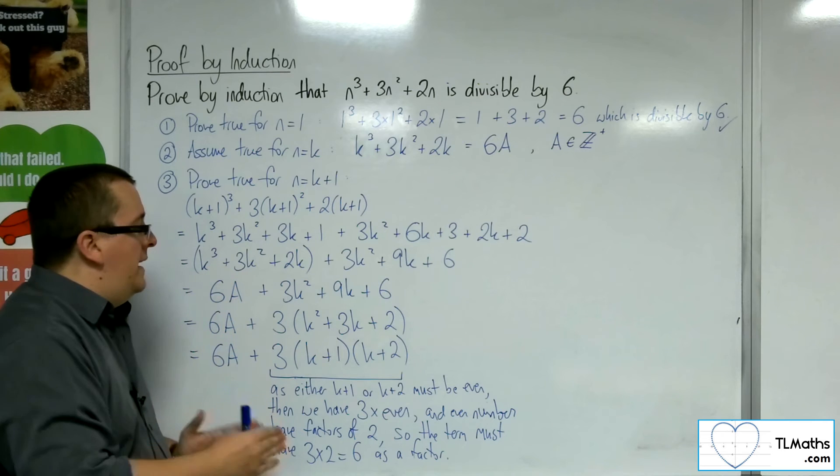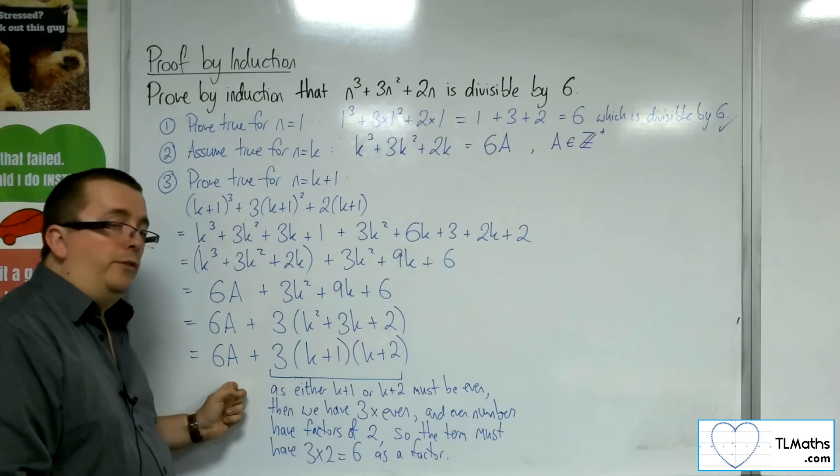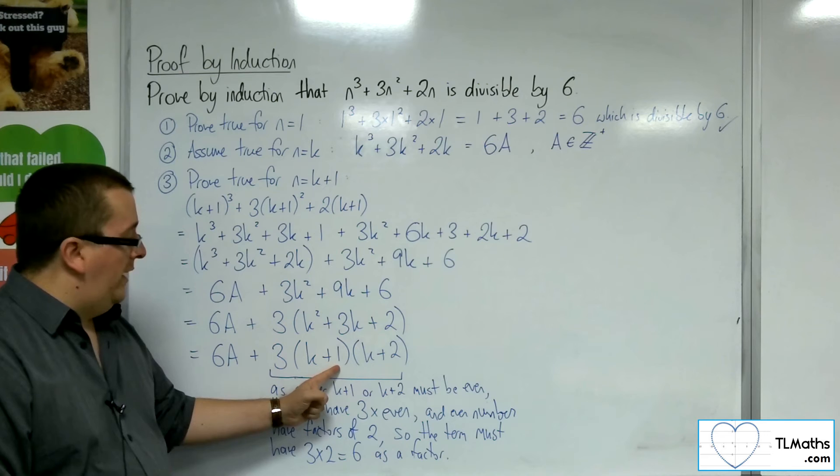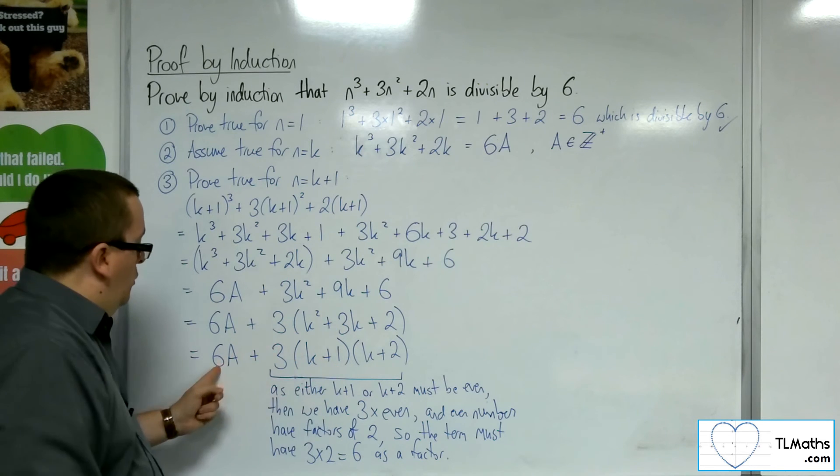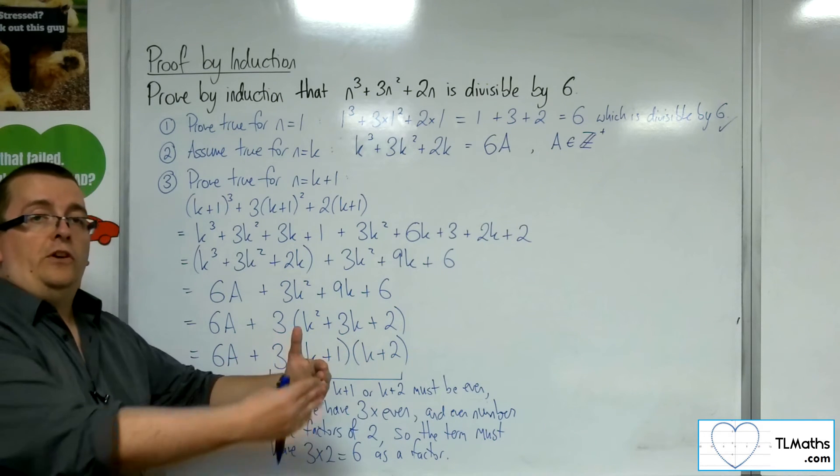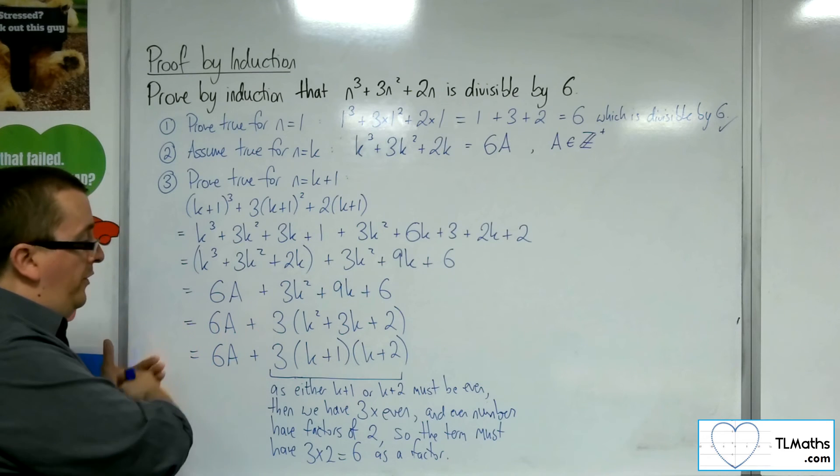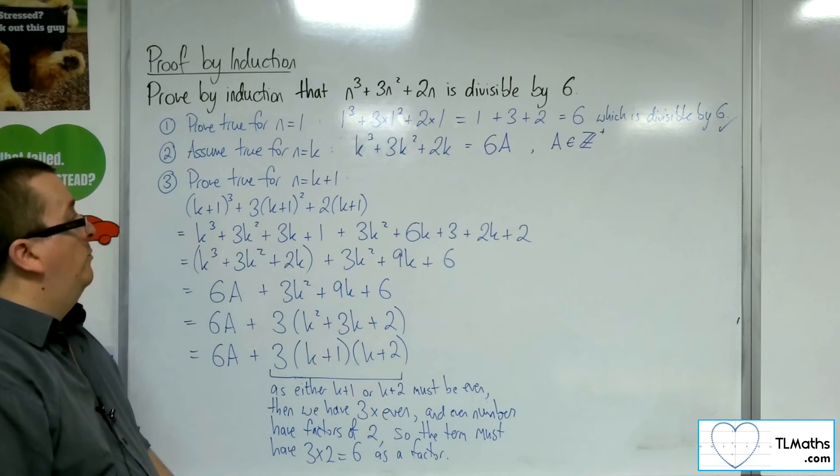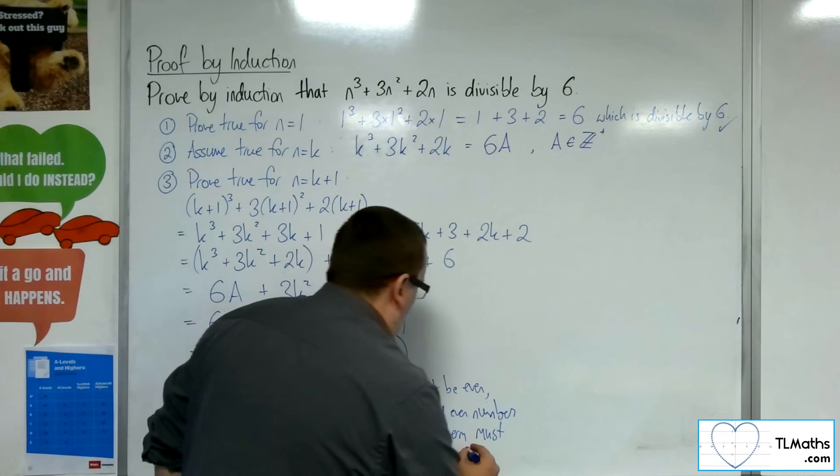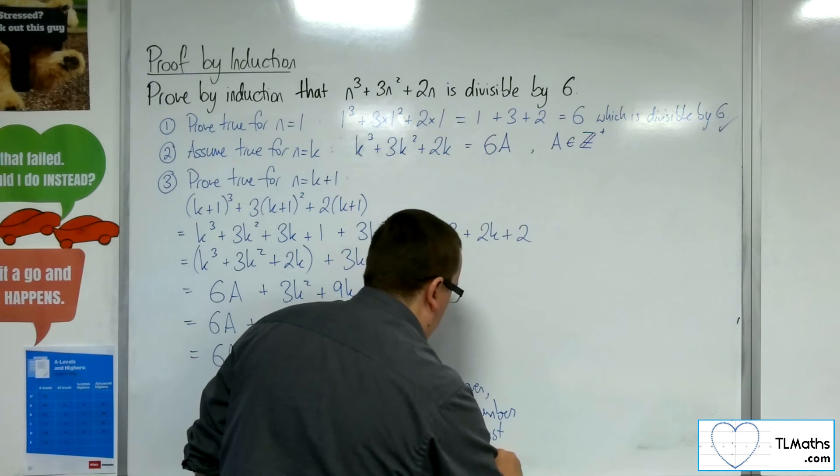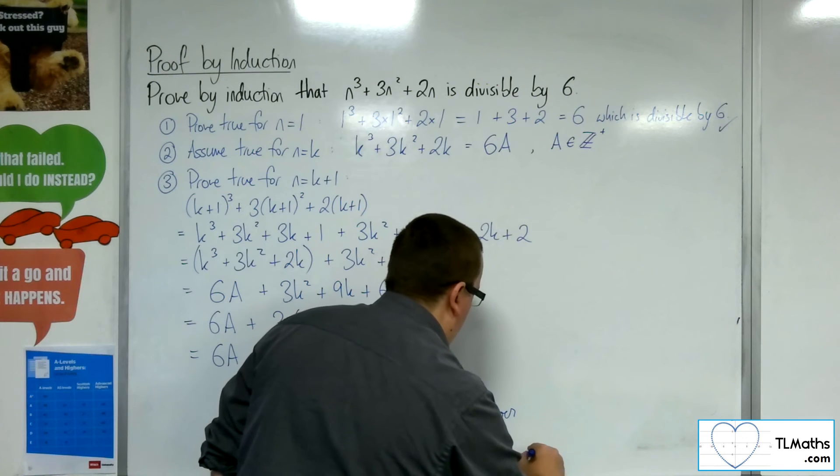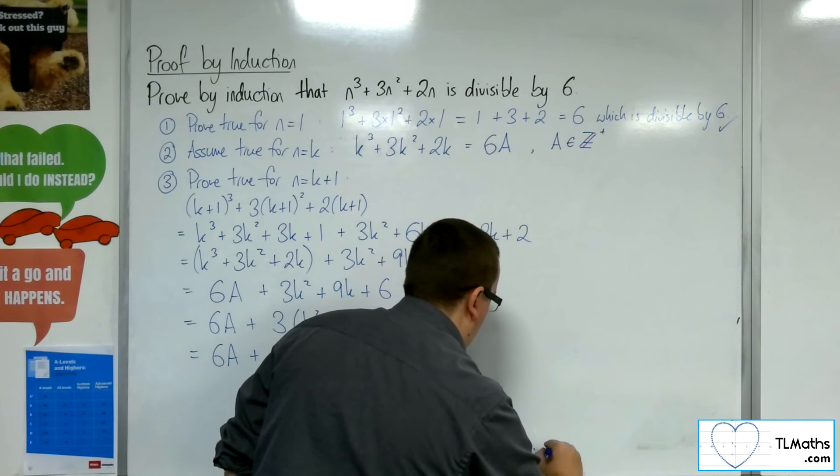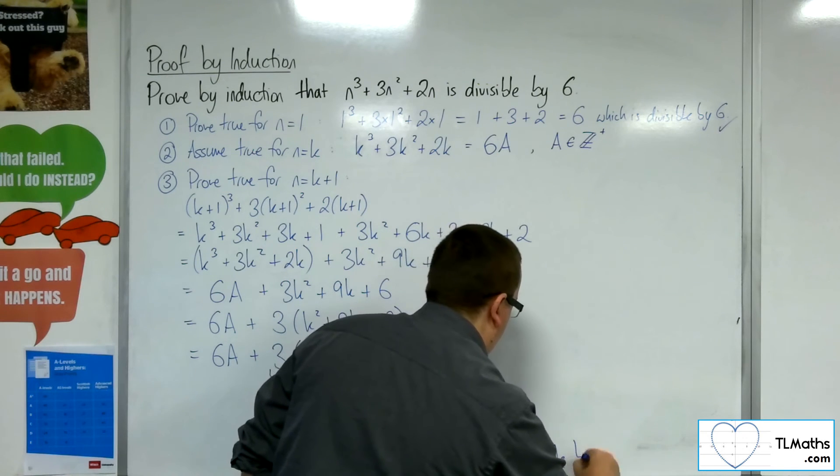So, that means that as this has a factor of 6, and as this has a factor of 6, the whole thing must have a factor of 6, because I could pull 6 out of both terms. I could factor the 6 out. And so, it must be divisible by 6. Therefore, must be divisible by 6.